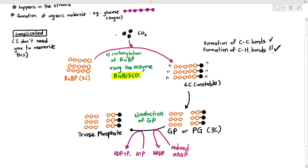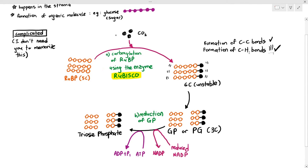In a cycle, whatever you begin with, you must get back again. The cycle begins with three RuBP molecules. The most important principle is that those three RuBP molecules must be regenerated. Looking at the three RuBP molecules, each has five carbons, so three RuBP molecules contain a total of 15 carbons — five multiplied by three equals 15.